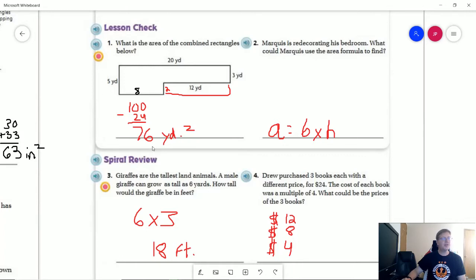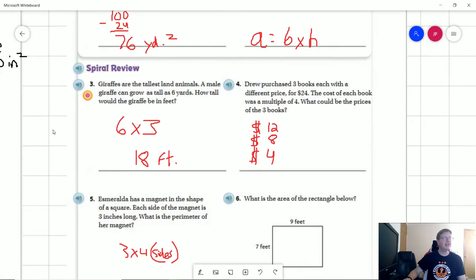For number 2, here's our formula. Hopefully everybody understands that by this point in time. Number 3, we are multiplying the number of yards times 3 feet and a yard. That would give us a total of 18 feet.